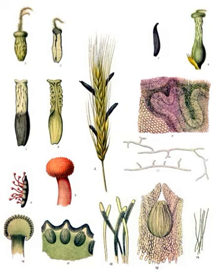Claviceps africana infects sorghum. In sorghum and pearl millet, ergot became a problem when growers adopted hybrid technology, which increased host susceptibility. It only infects unfertilized ovaries, so self-pollination and fertilization can decrease the presence of the disease, but male sterile lines are extremely vulnerable to infection. Symptoms of infection by C. africana include the secretion of honeydew, a fluid with high concentrates of sugar and conidia, which attracts insects like flies, beetles, and wasps that feed on it, helping spread the fungus to uninfected plants.